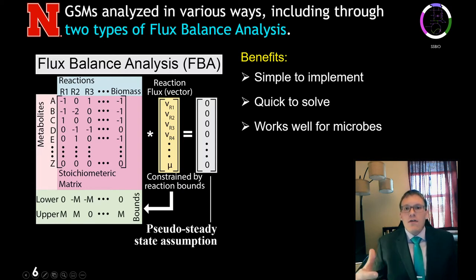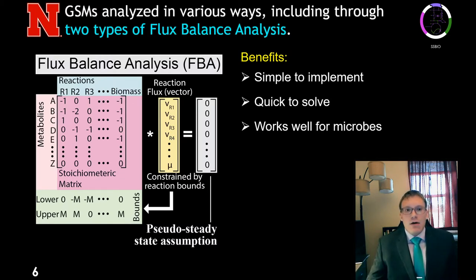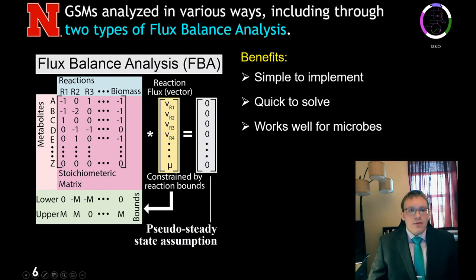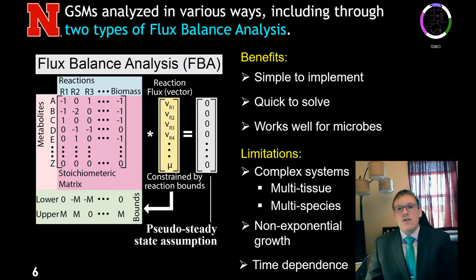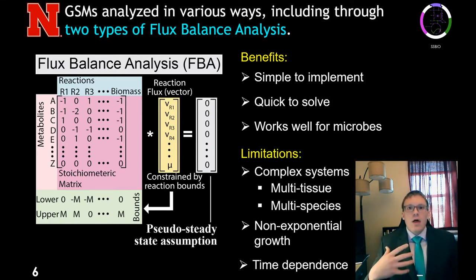One of the most common analysis approaches when using a genome scale model is flux balance analysis. There are two primary kinds. Ordinary linear flux balance analysis utilizes the pseudo-steady-state assumption. It's simple to implement, quick to solve, and works well for microorganisms — basically just solving a series of linear problems. The limitations are that it's difficult to implement for complex systems, especially when modeling growth. We can't model things over time and it's difficult to model non-exponential growth.